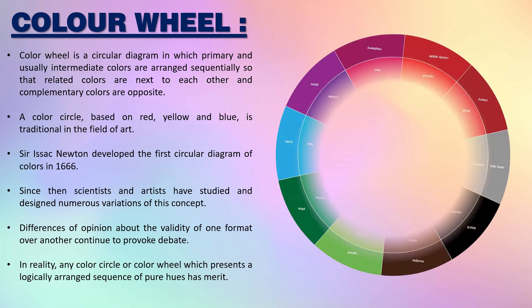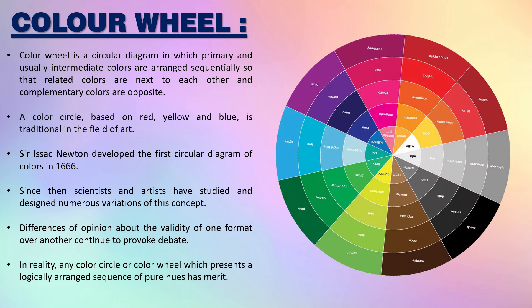Now discussing about the color wheel. You can see there are different color schemes: pinks, purples, blues, greens, yellows, maroon, brown, blacks and grays. So let us discuss in detail.